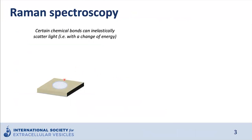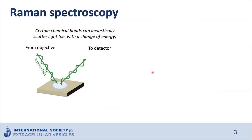The principle of Raman scattering can be explained as follows. When light interacts with matter, different phenomena may occur. Depending on the material, light can be absorbed, reflected, scattered, or transmitted. Of particular interest is the process of light scattering, because this can yield molecular information about the material being impinged on by the light, such as EVs. When incident light — like a laser — interacts with a sample, the light is predominantly scattered with the same energy as that incident light. This is known as Rayleigh scattering, sometimes called forward scattering or side scattering in the context of flow cytometry.